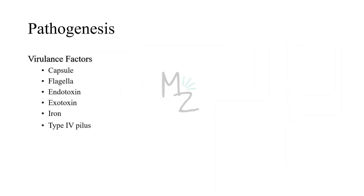Pathogenesis: Vibrio vulnificus uses the following virulence factors to cause disease: capsule, flagella, endotoxin and exotoxin, iron acquisition mechanisms, and type 4 pili.